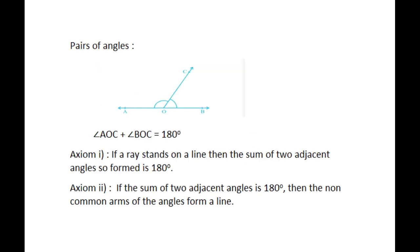Parts of angles: see the line AB and angle AOC. The angles are angle AOC, angle BOC, and angle AOB. Here, angle AOC plus angle BOC equals angle AOB. We know the measure of angle AOB equals 180 degrees. Therefore, angle AOC plus angle BOC equals 180 degrees. The definition of Axiom 1 is: if a ray stands on a line, then the sum of two adjacent angles formed is 180 degrees. In Axiom 2: if the sum of two adjacent angles is 180 degrees, then the non-common arms of the angles form a line.